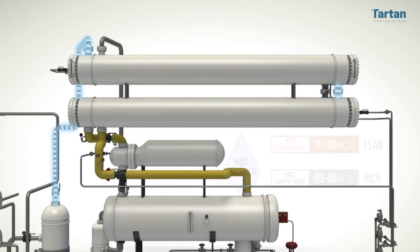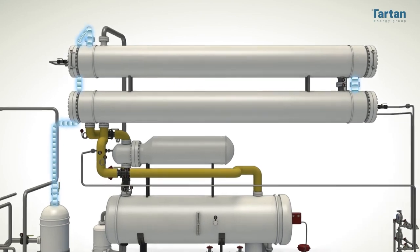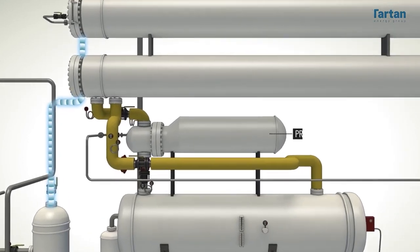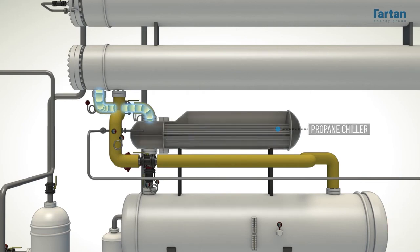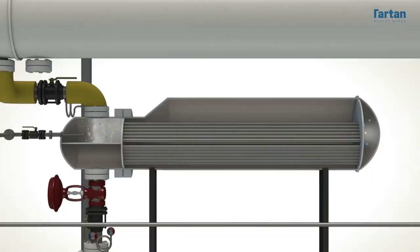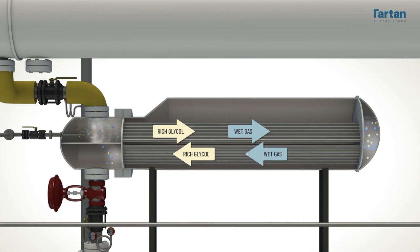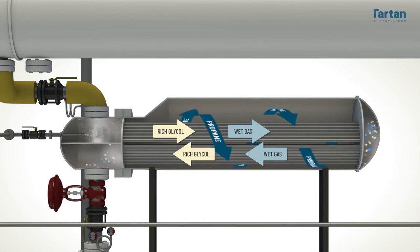After passing through the exchangers, the gas is further cooled in the chiller, an exchanger involving a propane cooling loop. The process gas enters the tube side and propane is on the shell side.